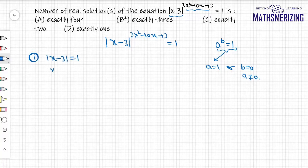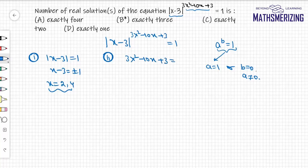This gives x - 3 = ±1, so x = 2 or x = 4. The second case is when the power equals 0, so 3x² - 10x + 3 = 0.